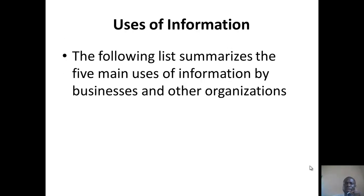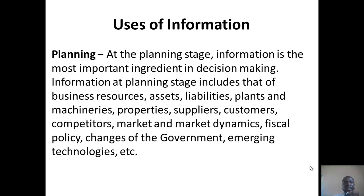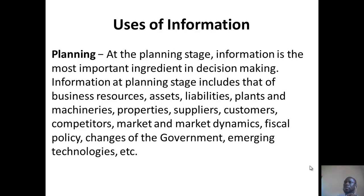So let's look at the uses — five uses of information by business and other organizations. First, planning. IT or information systems are required, seriously, at the planning stage. Information is the most important ingredient in decision making. At the planning stage, you will require information about the business assets, liabilities, plants and machinery, properties, suppliers, customers, competitors, market and market dynamics, and fiscal policy changes of the government.